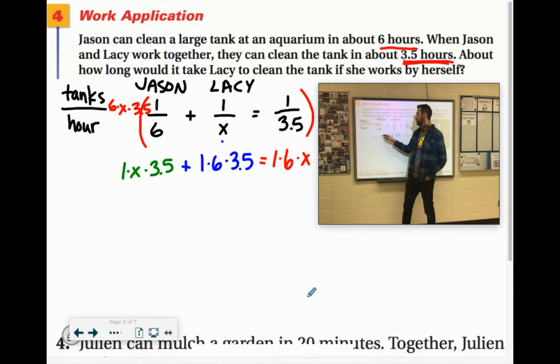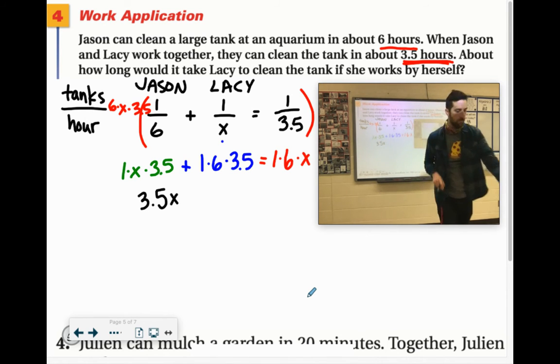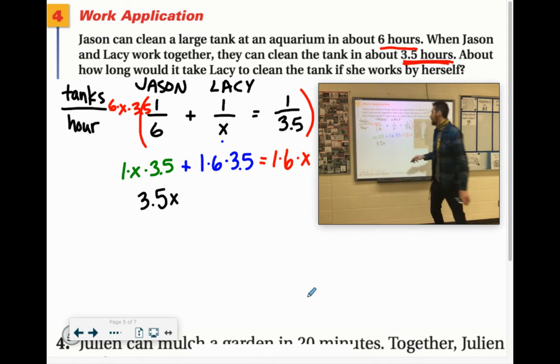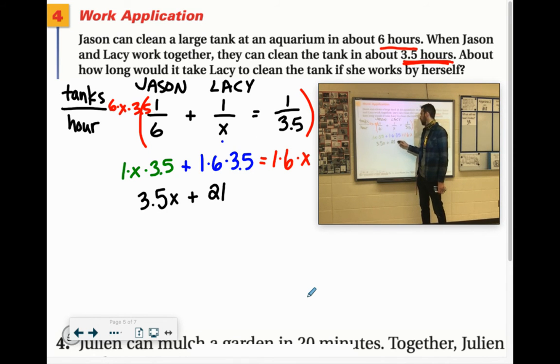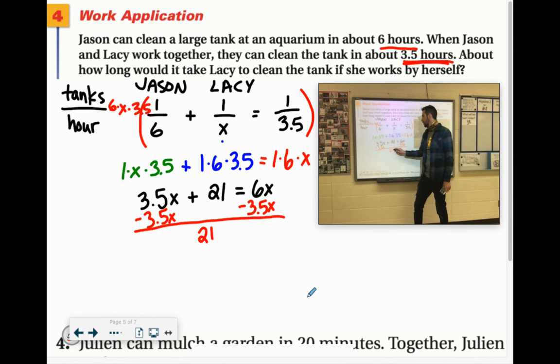So one times X times 3.5 would give us 3.5X. One times six times 3.5, six times three is 18, half of six is three, so 21 equals one times six times X is 6X. Now if we get our X's together here, minus 3.5X, we get 21 equals 2.5X.